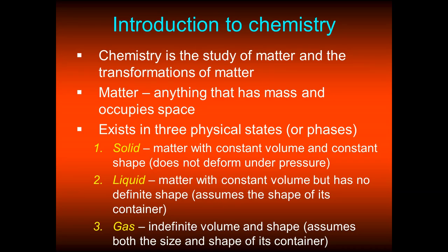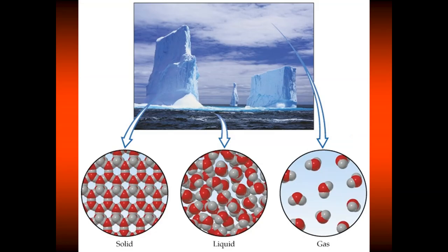Let's take water, because water is the only substance that exists naturally in all three phases. Looking at solid ice at a microscopic or atomic level, you'll notice a very orderly structured pattern — that's what gives it constant volume and constant shape. Liquid water at the atomic level is more chaotic and random, giving it constant volume but indefinite shape. Gaseous water is the most chaotic of all, with no structure — indefinite volume and indefinite shape.